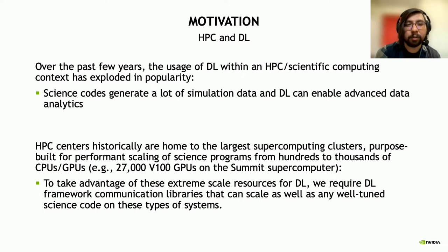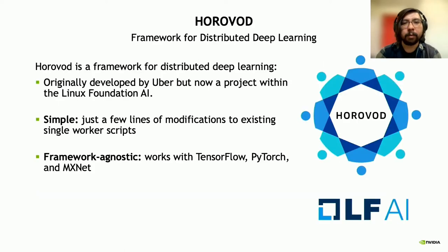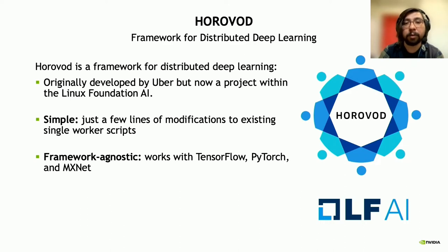In order to take advantage of these extreme scale resources for deep learning, we desire a deep learning framework communication library that can scale as well as any well-tuned science code on these types of systems. For this work, we decided to leverage Horovod, an existing framework for distributed deep learning that's popular in the field. Horovod was originally developed by Uber to convert single-worker TensorFlow scripts into multi-worker data parallel scripts, but is now a broader project within the Linux Foundation AI. Horovod is simple—it requires just a few lines of modifications to make scripts data parallel—and it's framework-agnostic, supporting TensorFlow, PyTorch, and MXNet.